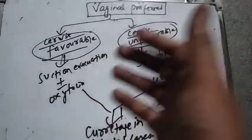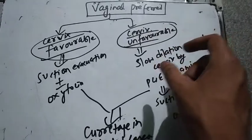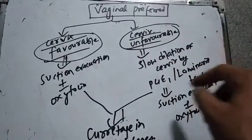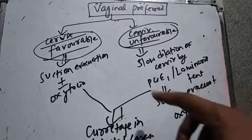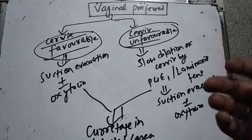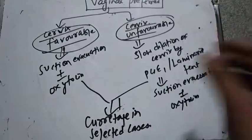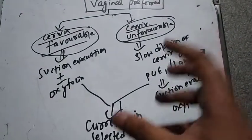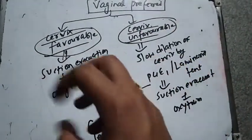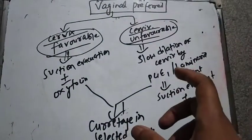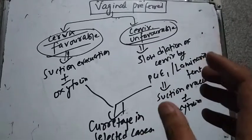If the cervix is still unfavorable, we need to do a slow dilation of the cervix using prostaglandins and laminaria tent. Slowly the cervix is dilated, and then we perform the evacuation. We also administer oxytocin and perform curettage. This completes the management of the unfavorable cervix group.